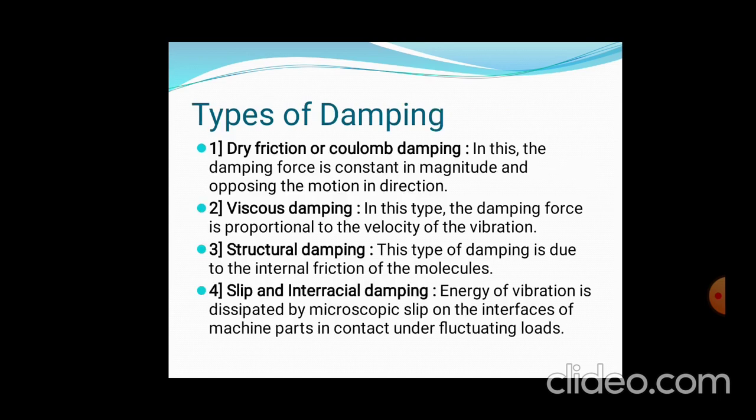The types of damping are: dry friction, viscous, structural, and slip, depending on the condition available. In dry friction damping, the damping force is constant in magnitude and opposite to the direction of motion. In viscous damping, the damping force is directly proportional to the velocity of vibration. In structural damping, internal friction carries the damping.